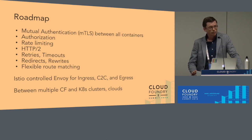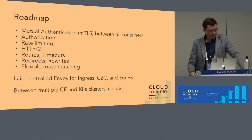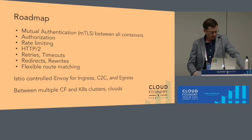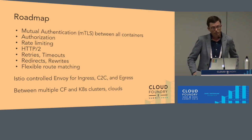Once we have these fundamental integrations in place, we're excited to roll out the capabilities that Istio offers to Cloud Foundry users. One of the top asks from users is support for mutual authentication — mTLS — between services, so that data is encrypted everywhere in the service mesh. This will also enable us to offer token validation for authentication and authorization, support for rate limiting, support for new protocols like HTTP/2, retries, timeouts, redirects and rewrites, and a great deal of flexibility in route matching.